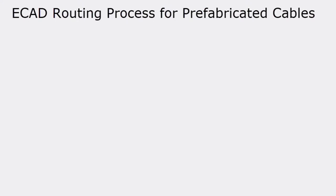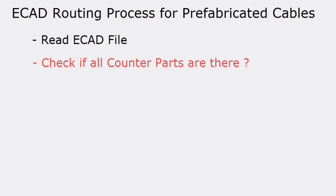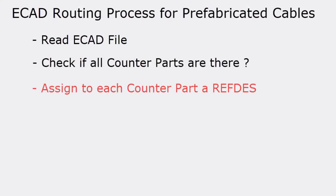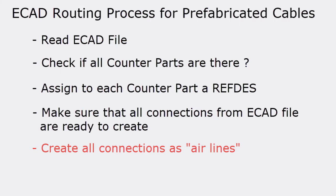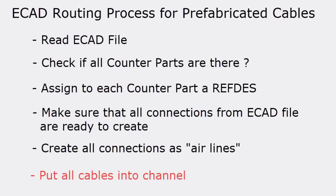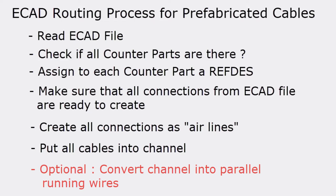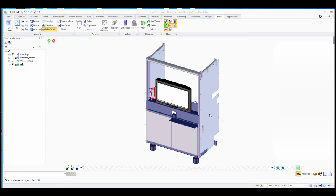The process for prefabricated cable ecat routing is: first, read the ecat file where all connections are defined; then check that all counterparts in the ecat file are available in the model; assign reference designators so we know which endpoint connects where; verify all connections are valid; create them all as airlines; and finally route all cables automatically to the channel. Optionally, you can convert the channel into parallel running wires.